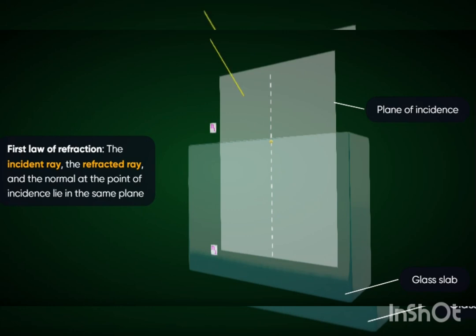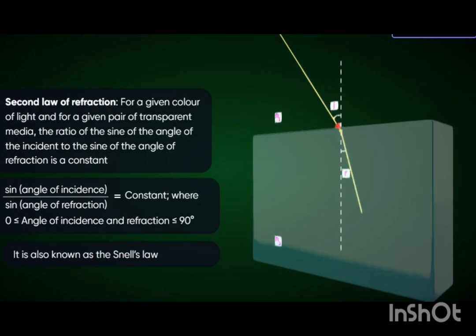Now, let us see the laws of refraction of light. The refraction of light on going from one medium to another takes place according to two laws, which are known as the laws of refraction of light. The first law of refraction states that the incident ray, the refracted ray, and the normal at the point of incidence lie in the same plane. The second law gives a relationship between the angle of incidence and the angle of refraction. This law is also called Snell's law of refraction. According to this law, the ratio of sine of the angle of incidence to the sine of angle of refraction is constant. That is, sin i by sin r is constant.